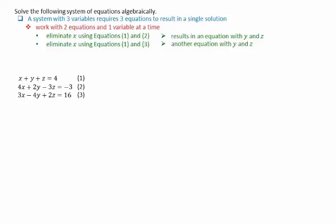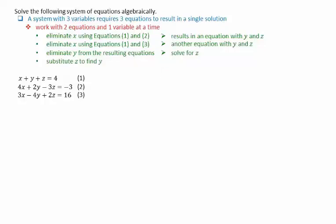We can then use these two equations with y and z to eliminate y. This will allow us to solve for z, and then we can substitute this value of z to figure out y. Once we have values for both z and y, we substitute both of these to figure out the value for x.